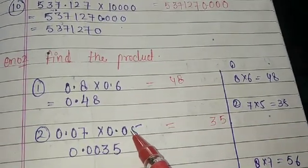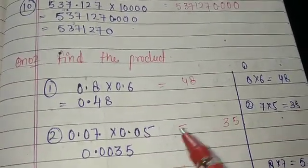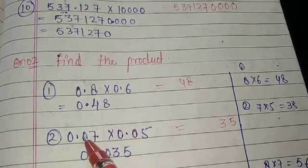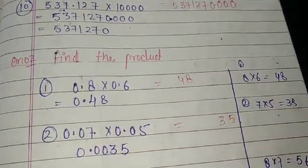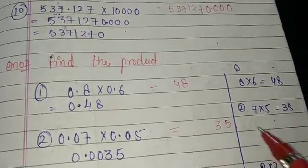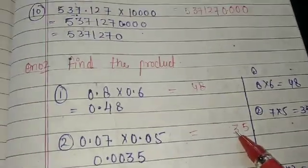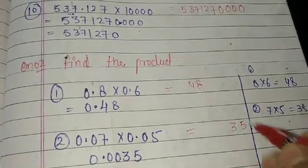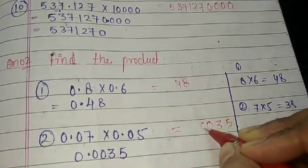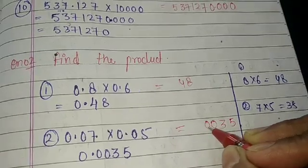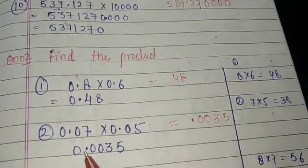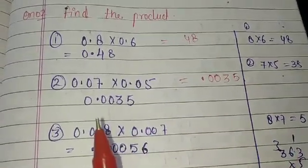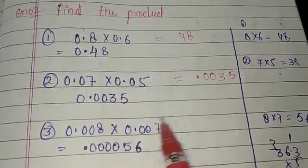Now count the total decimal digits carefully: 1, 2, 3, 4 — we need 4 decimal places. But here we only have 2 digits in our result. So we need to add zeros before the digits to make up 4 decimal places.